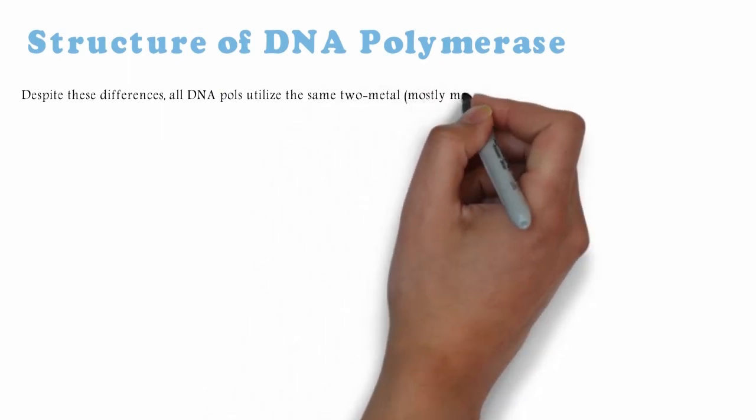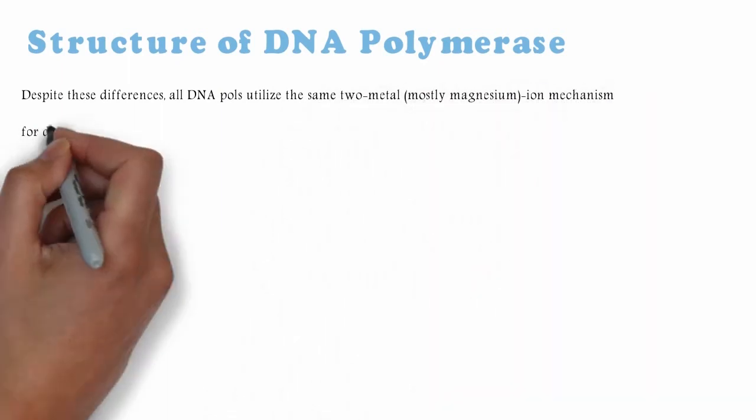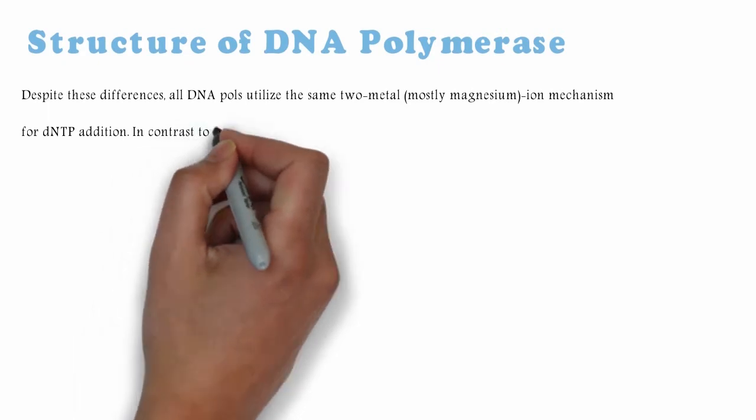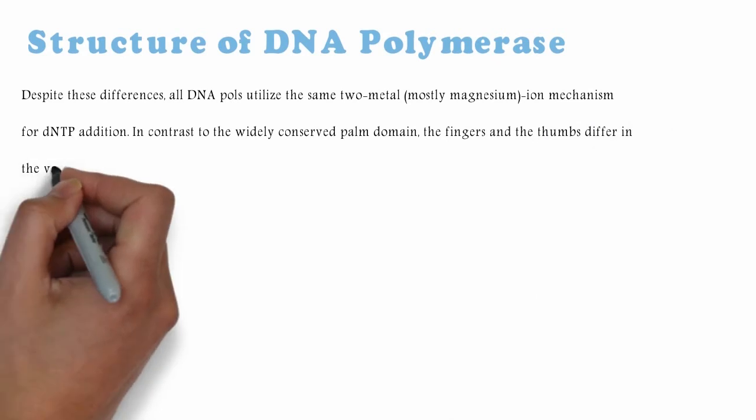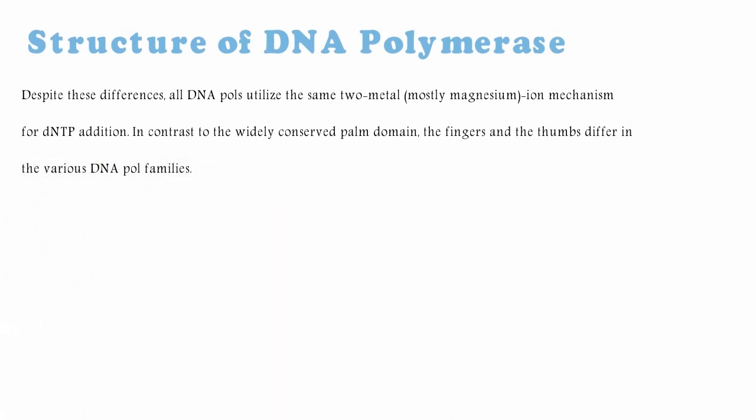Despite these differences, all DNA poles utilize the same two-metal, mostly magnesium ion, mechanism for dNTP addition. In contrast to the widely conserved palm domain, the fingers and the thumbs differ in the various DNA pole families.